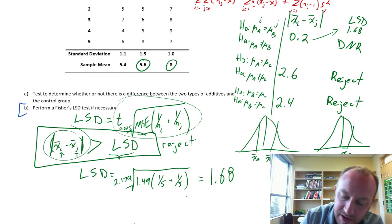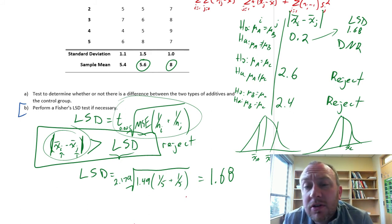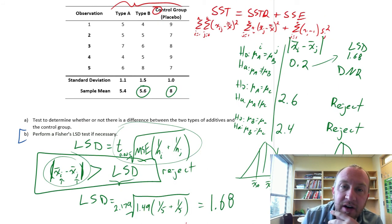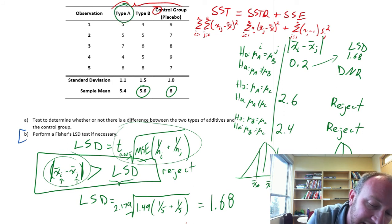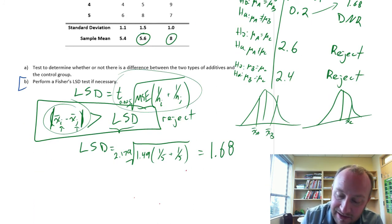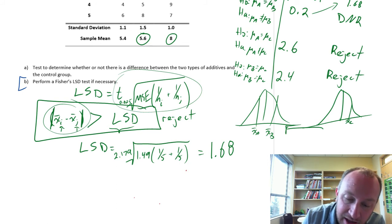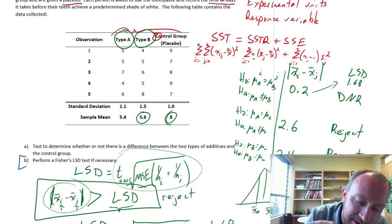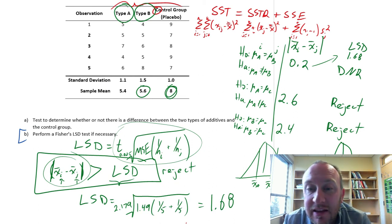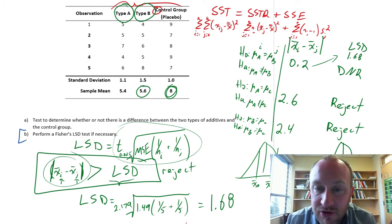Here we have X bar c is out here somewhere. Here we have a case where we have three treatments, but they came from just two distributions. Both of our different types of toothpastes, they both came from the same population that is less than or lower than, has a lower mean than the control group. The control group with a sample mean of 8 is larger than the two different types of toothpaste additives.